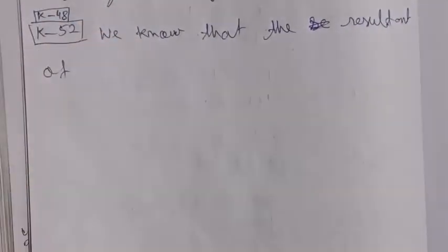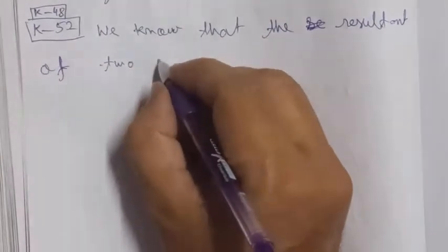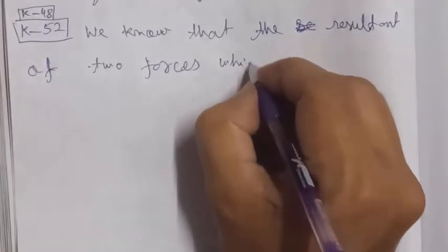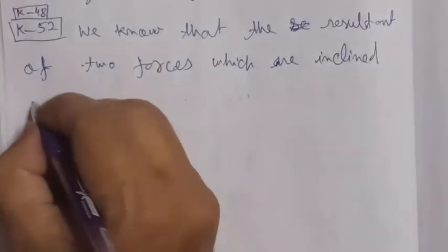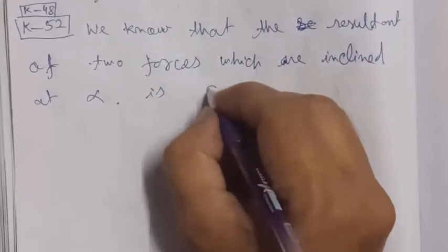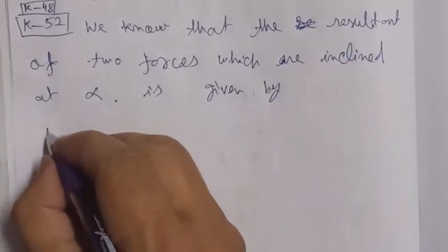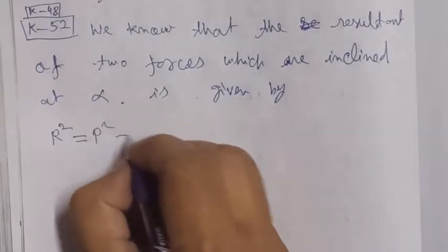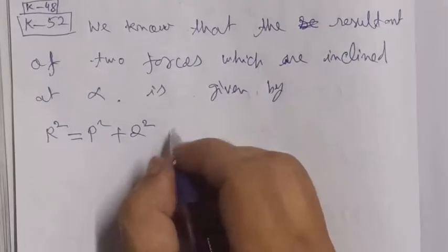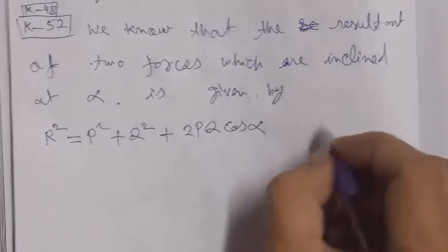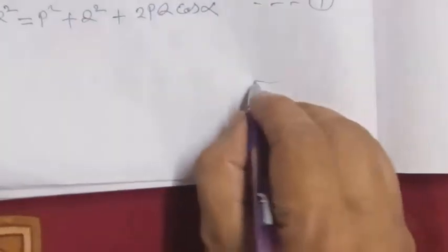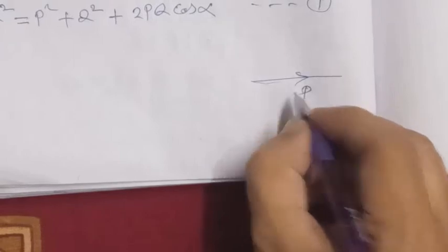We start solving this question. We know that the resultant of two forces P and Q, which are inclined at angle alpha, is given by R squared equals P squared plus Q squared plus 2PQ cos alpha. Here R is the resultant of forces P and Q, and alpha is the angle between P and Q.